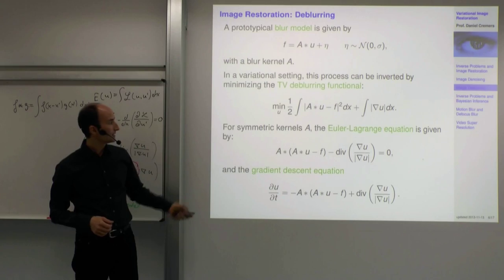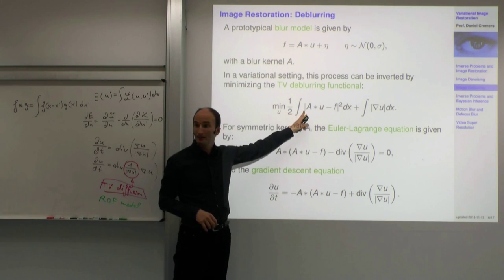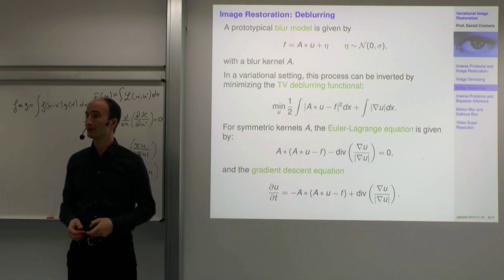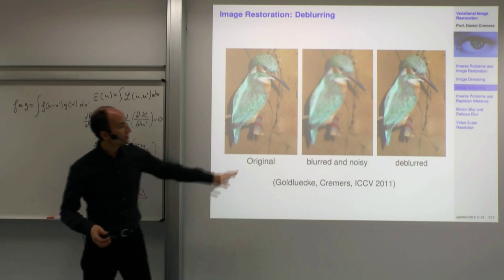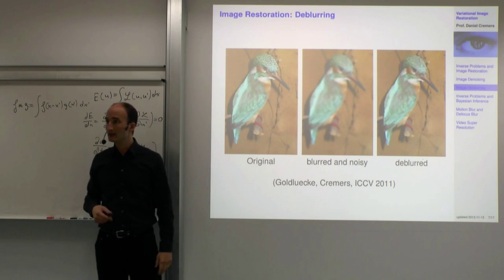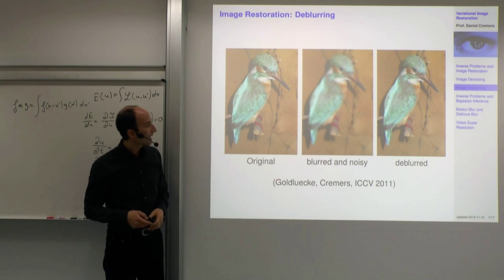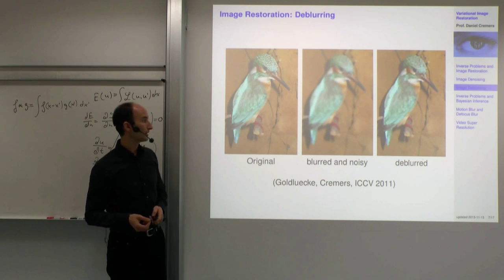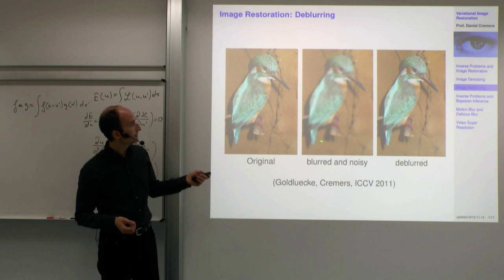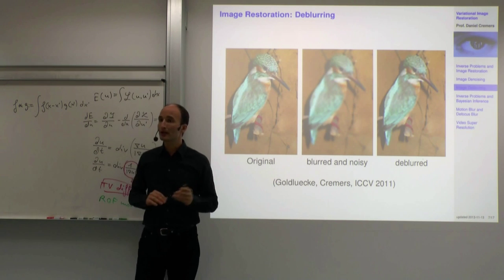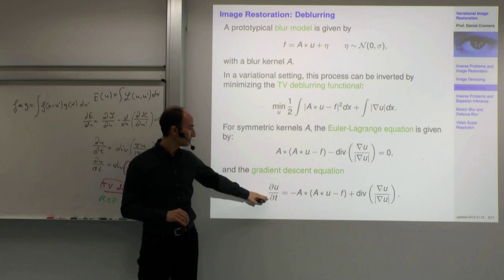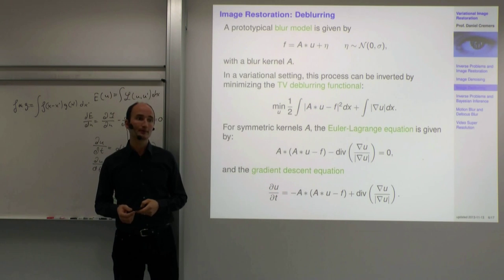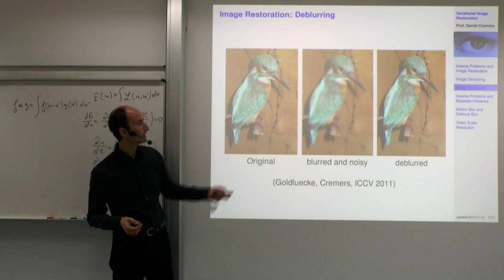This is the gradient descent equation, and the cost function is convex, so gradient descent will lead to the global minimum. Here's an example from 2011 — TV deblurring was done a long time ago, but this example uses a more sophisticated regularizer. I always want to show examples that are not 20 years old, so this is a more state-of-the-art result.